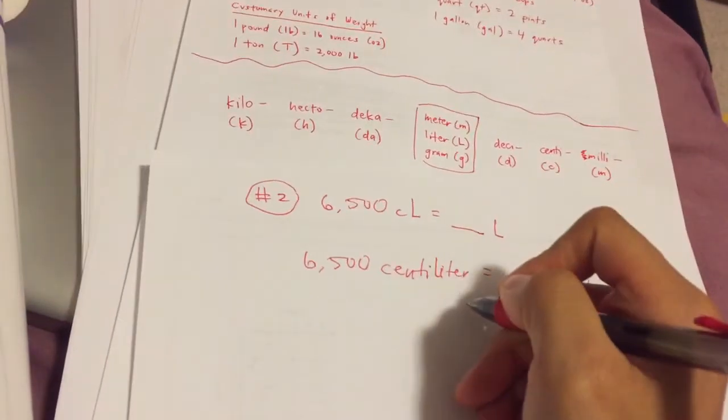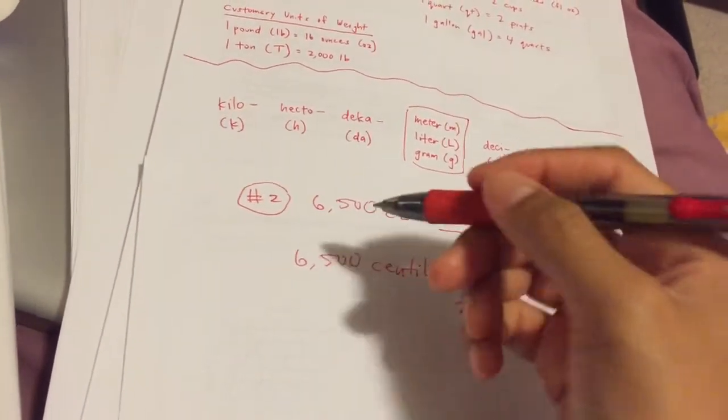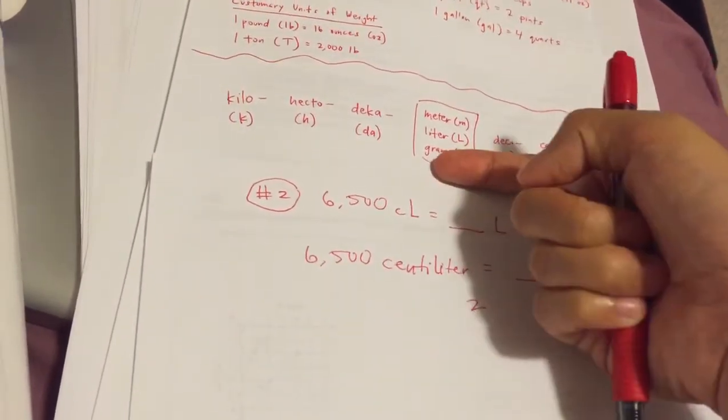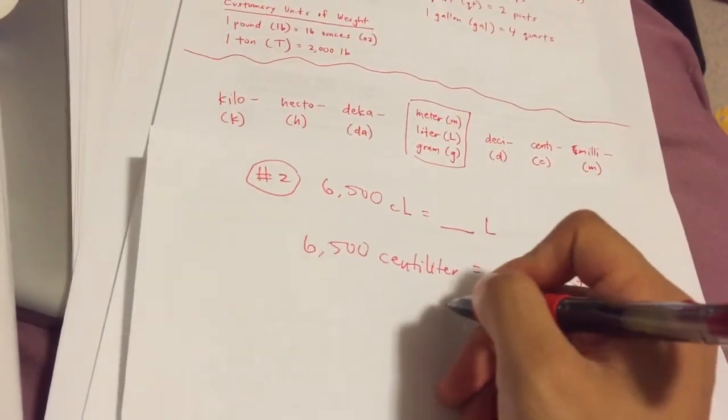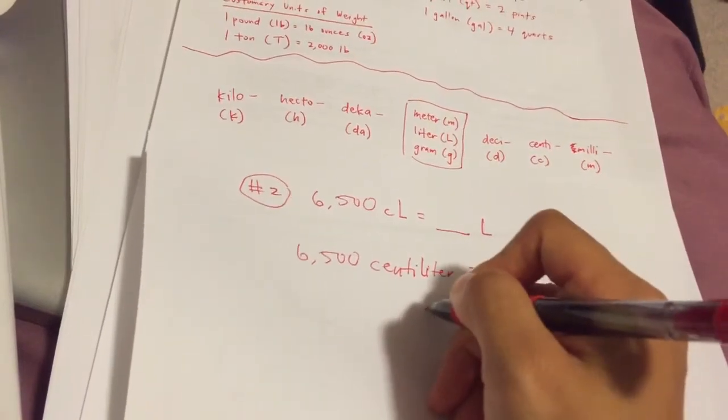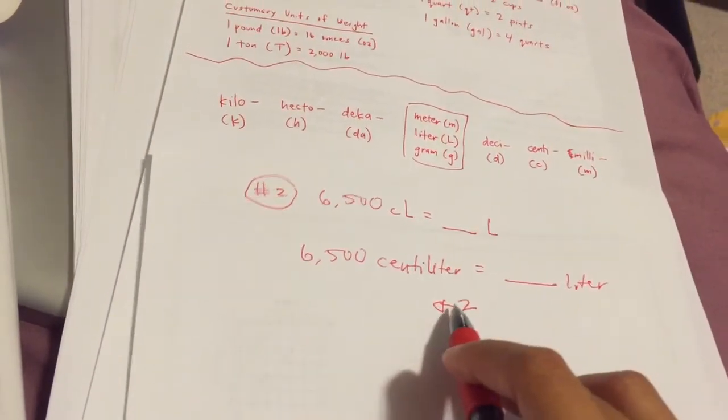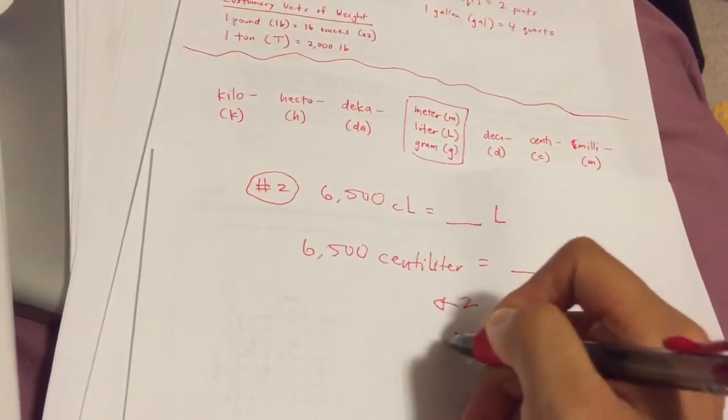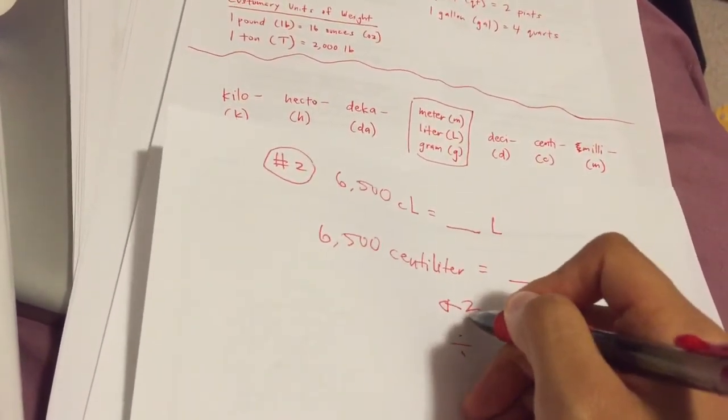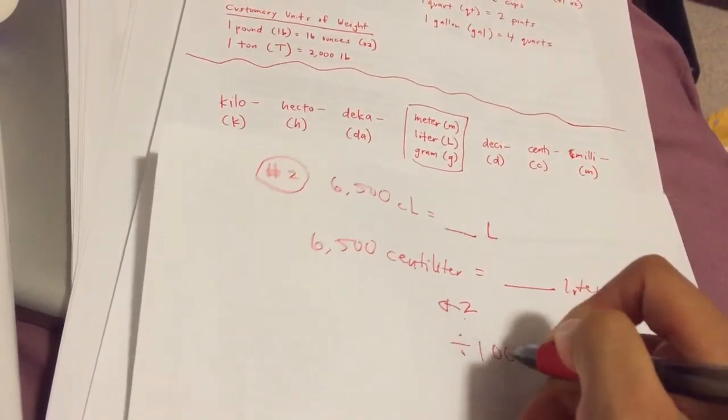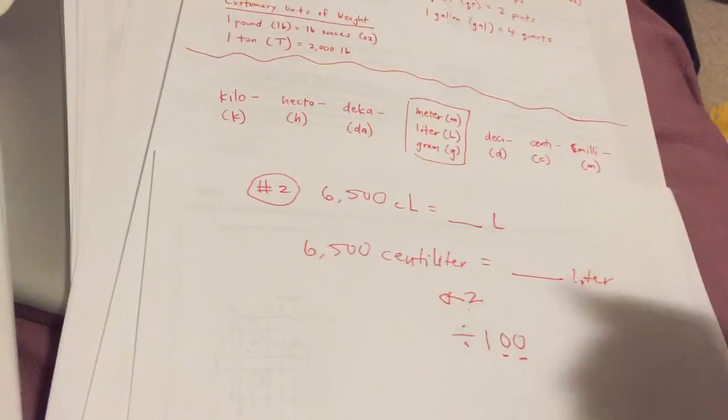We're going twice. Now, are we going to the left or to the right? If we're starting here and going this way, we're going two times to the left. If we're going two times to the left, we're getting smaller, we're dividing. We're dividing by a power of two placeholders, dividing by 100.